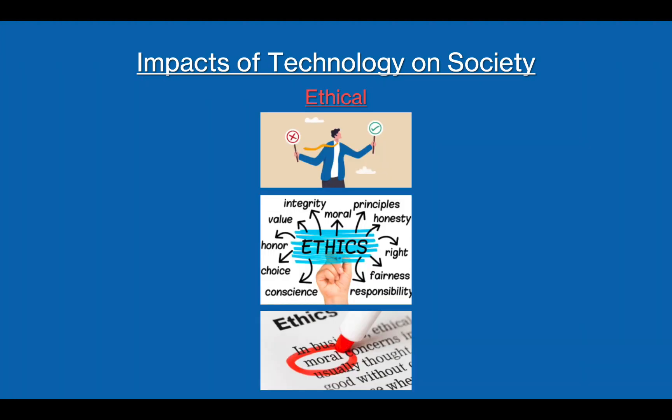Ethics is what is considered to be right and wrong by society. Ethical issues include the fact that technology may be biased, for example if the code for an application is written by someone who is discriminatory or biased in another way. The technology could also cost a lot, or there could be risks to users' health and safety. These are all problems as they could cause a situation that is morally wrong.